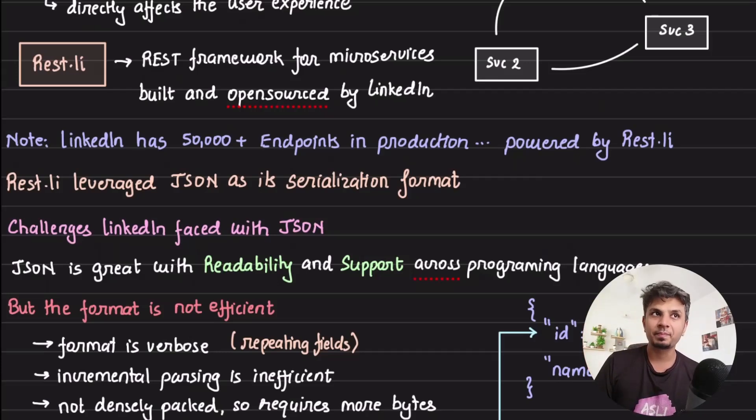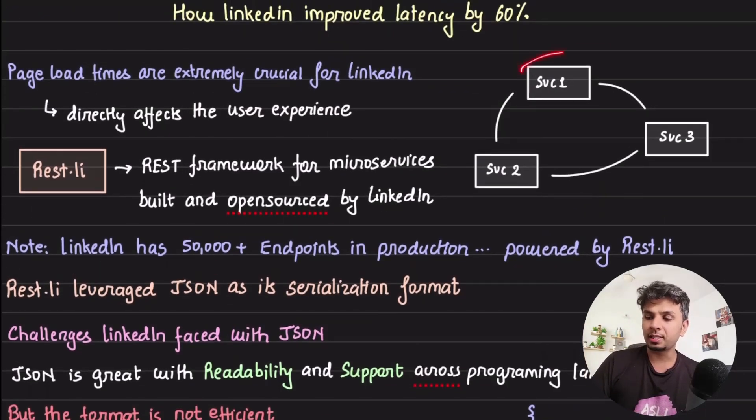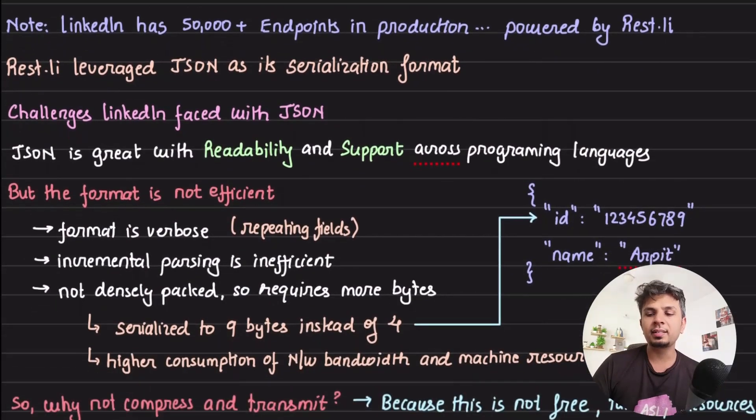Now when two services powered by REST.li are talking to each other, they use JSON as a serialization format. We all are very familiar with JSON as a format, but LinkedIn was not happy with this format because there are certain challenges with it.